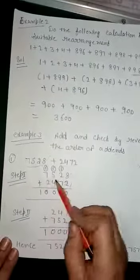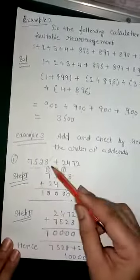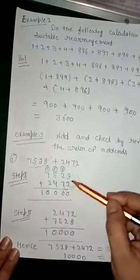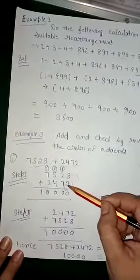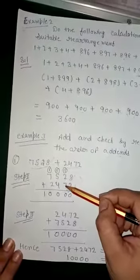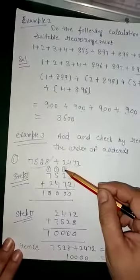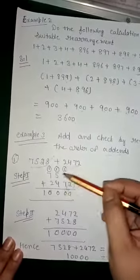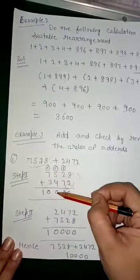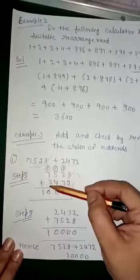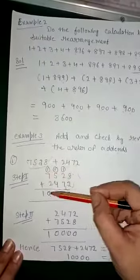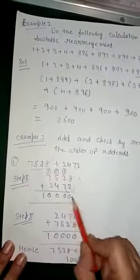Step one: We will add the first and second addends in the straightforward order. Adding column by column: 8 + 2 = 10, write 0 carry 1. 2 + 7 + 1 = 10, write 0 carry 1. 5 + 4 + 1 = 10, write 0 carry 1. 7 + 2 + 1 = 10. The result is 10,000.